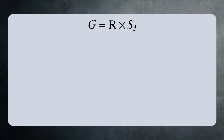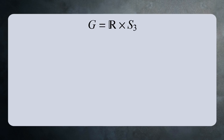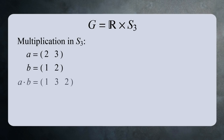Up to now, all the groups we've considered have been abelian. Let's now look at a direct product where one of the groups is non-abelian. For this example, we'll look at the direct product of the real numbers under addition and the symmetric group S3. While the real numbers are abelian, S3 is non-abelian. For example, using cycle notation, let A = (2,3) and B = (1,2). Then A·B = (1,3,2), while B·A = (1,2,3). So A·B ≠ B·A.